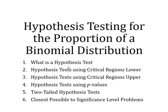There are then two different approaches — critical regions and p-values — and your teacher will guide you as to which you are going to do first. Then later on we'll have a look at some two-tailed tests, and finally a slight alteration where we have to find the closest possible to a significance level.